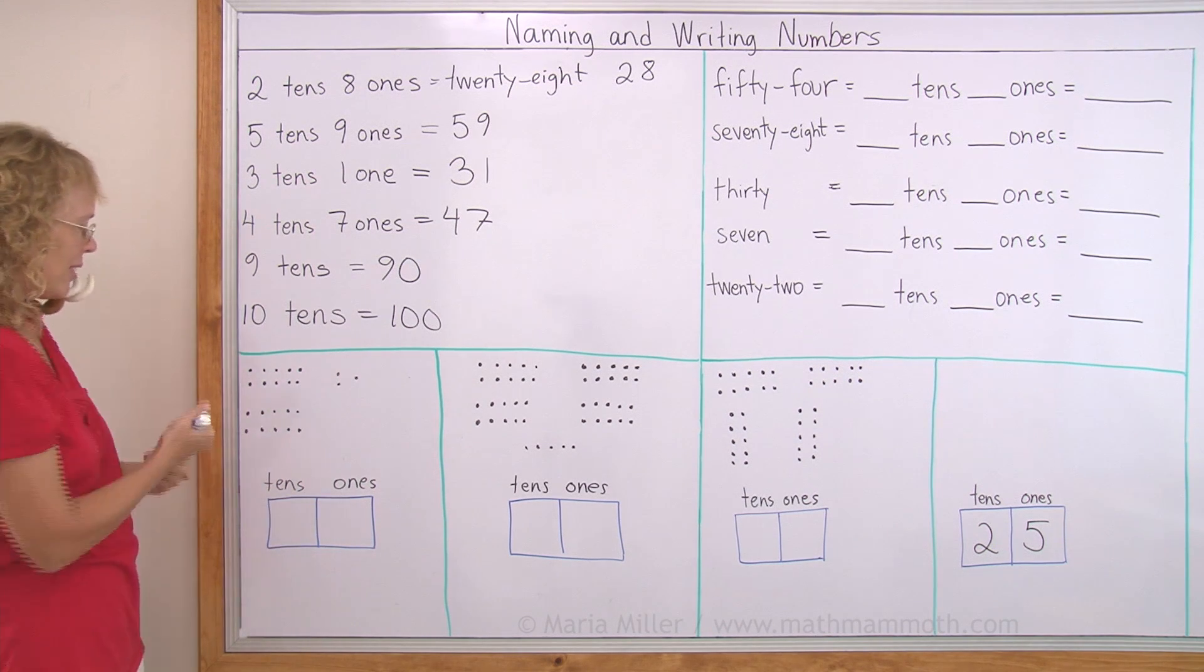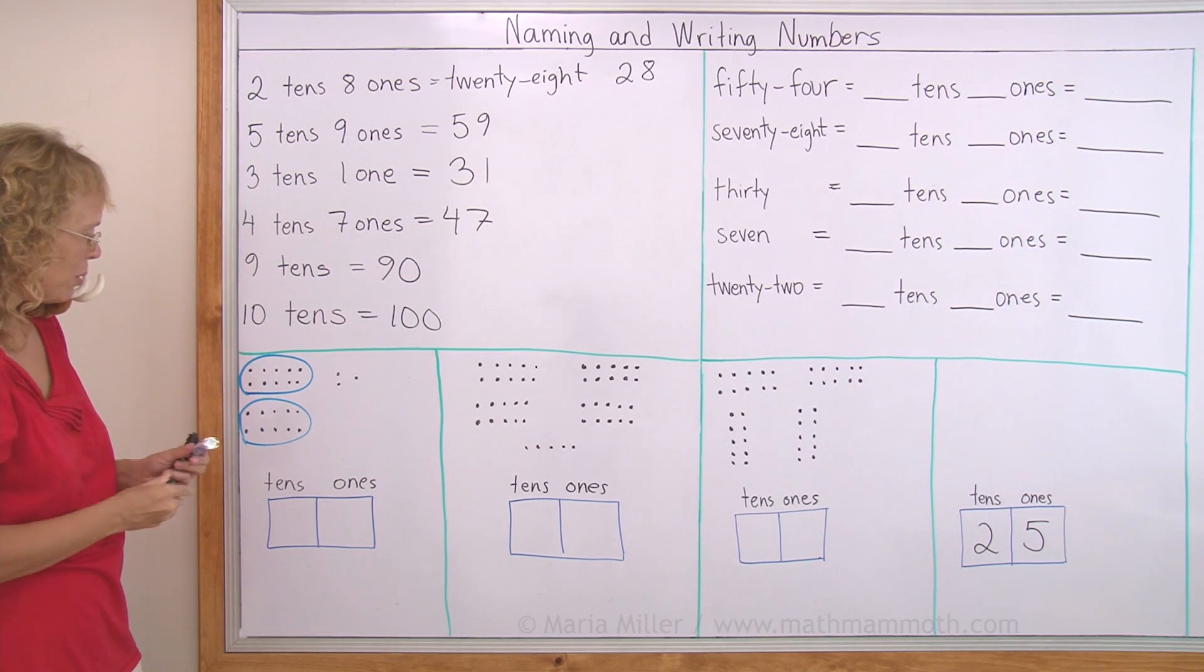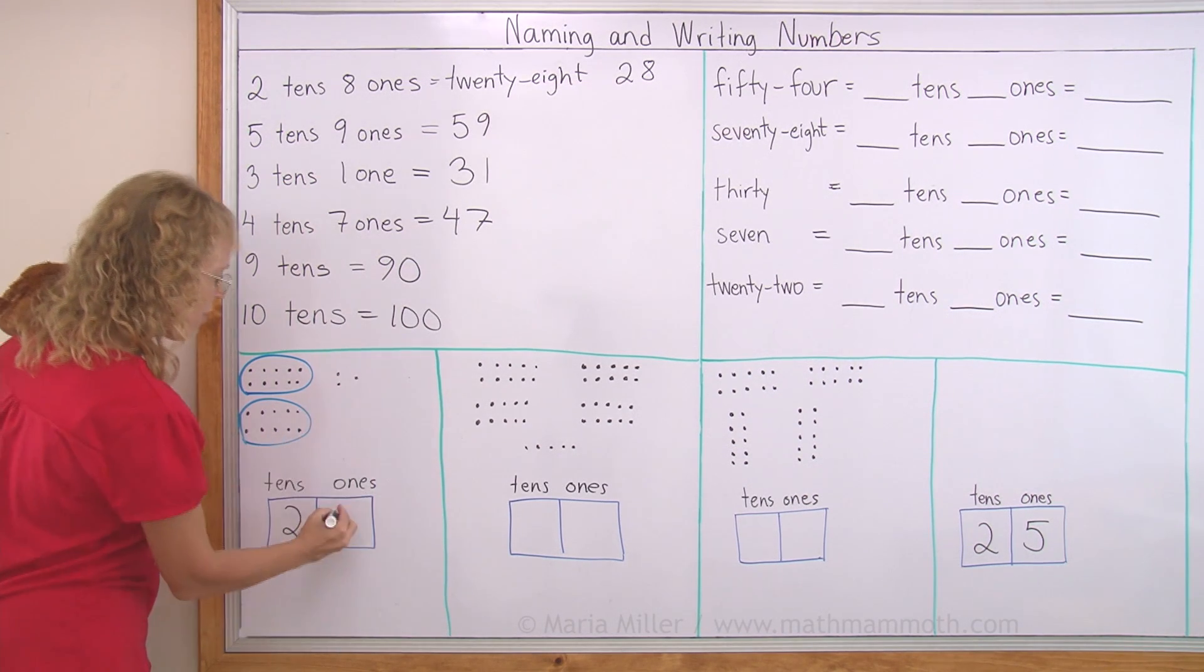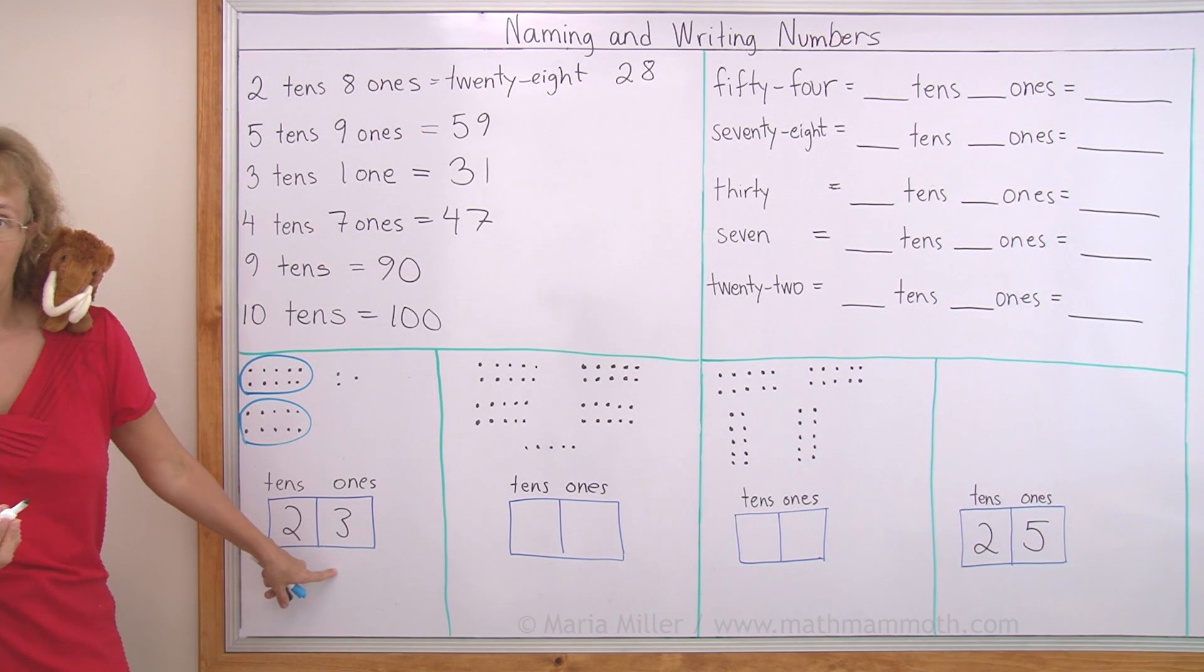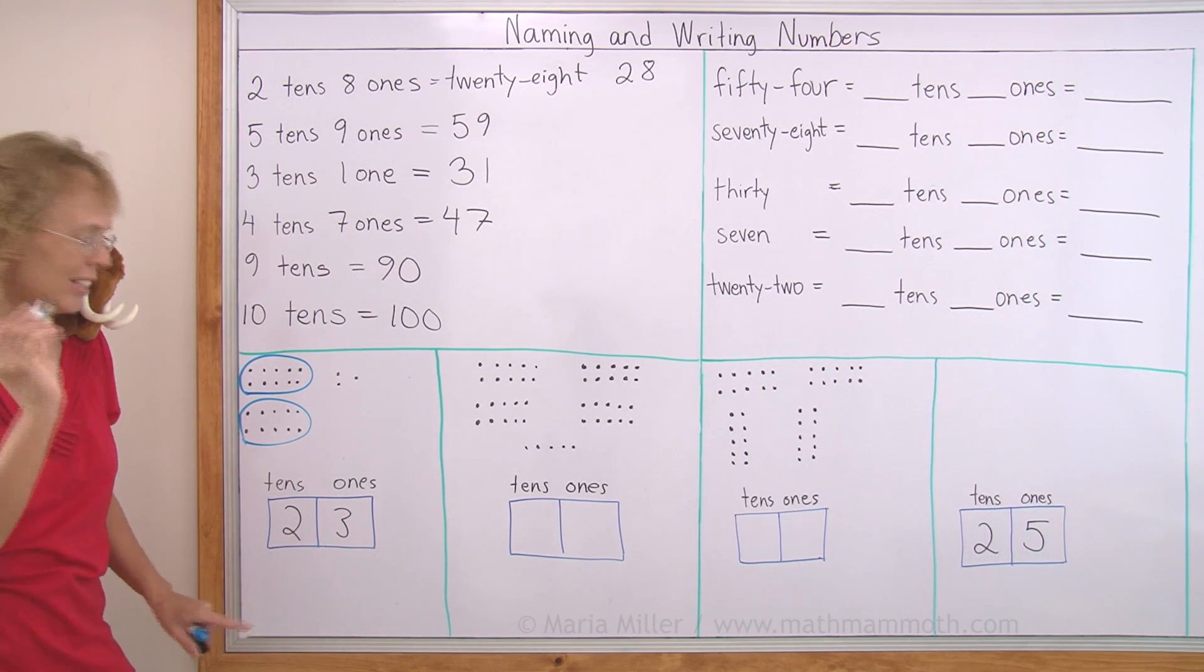How many tens, how many ones? These are already kind of grouped. So we get 2 ten groups, 2 tens and 3 ones. How do we say this number? 2 tens is 20, 23.